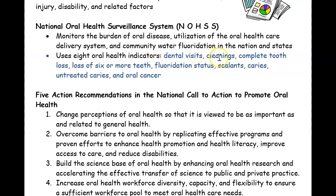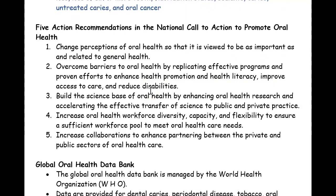NOHSS looks at how many people go for dental visits and cleanings, how many have lost all their teeth or six or more teeth, whether they have fluoride, sealants, caries, untreated caries, and oral cancer — eight different indicators. There's also a five-action recommendation in the National Call to Action to Promote Oral Health, including making oral health a priority and changing the perception of oral health.